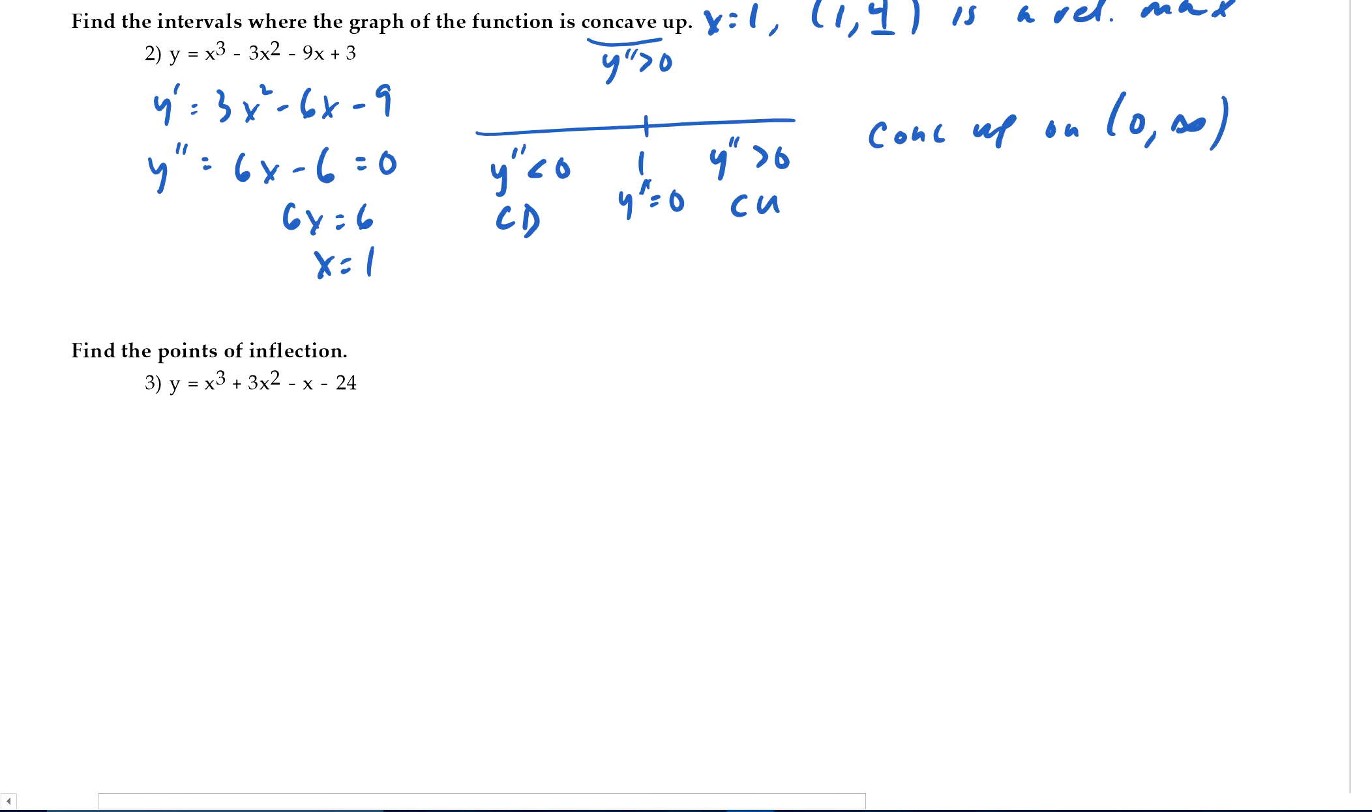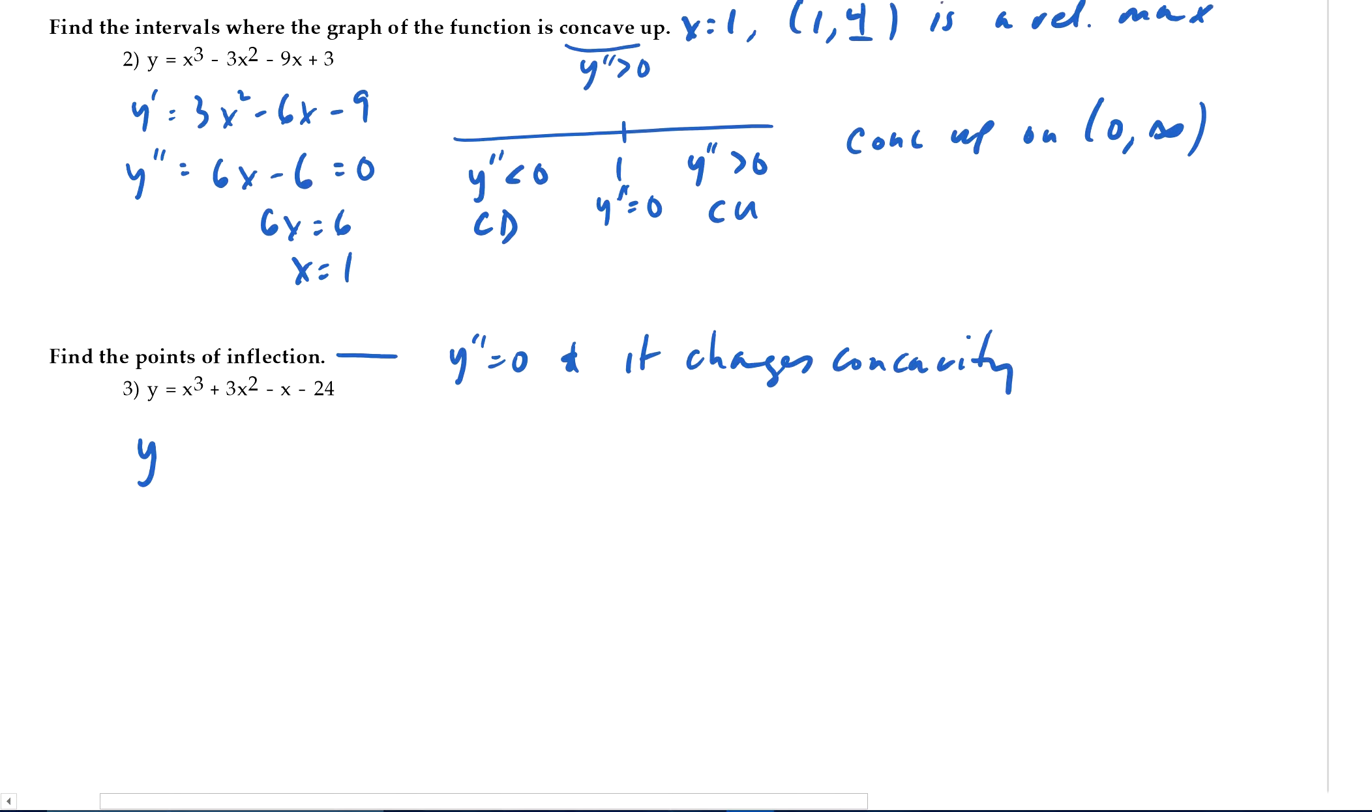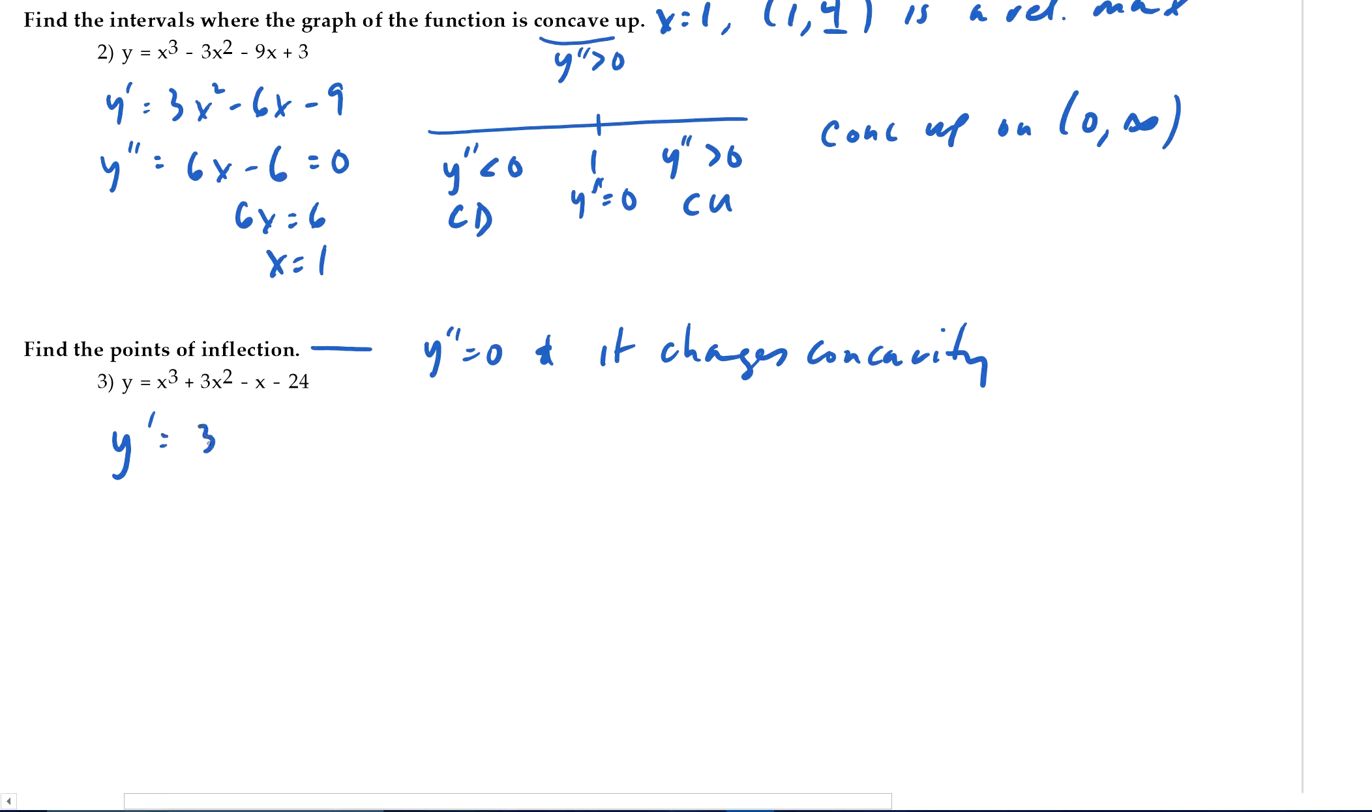And then the last one on this video. We'll do find the points of inflection. Well, like I said before, that's when the second derivative is 0 and it changes. So y prime is 3x squared plus 6x minus 1. And then y double prime is 6x plus 6 equals 0. So x is negative 1.